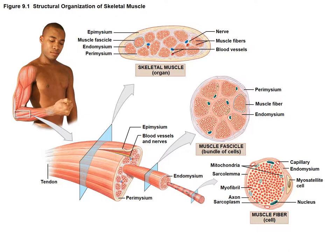Skeletal muscle is organized in many different layers. The outermost layer is the epimysium, which merges into and becomes the tendon that attaches the muscle to bone. Inside the epimysium are muscle fascicles — individual clusters or bundles of cells. Each fascicle is surrounded by connective tissue called the perimysium. Each fascicle is made up of bundles of muscle fibers, and each muscle fiber is surrounded by an endomysium.